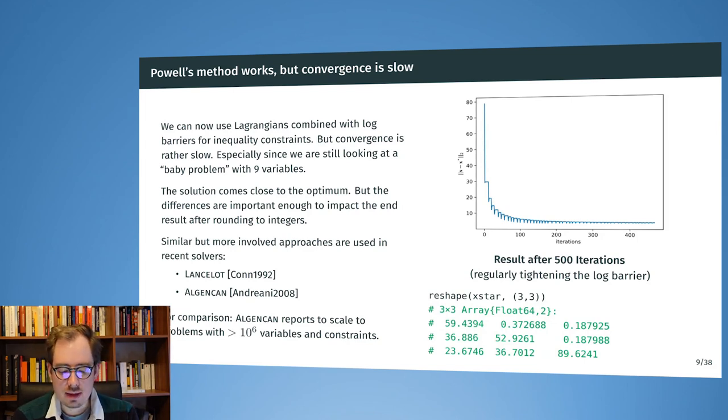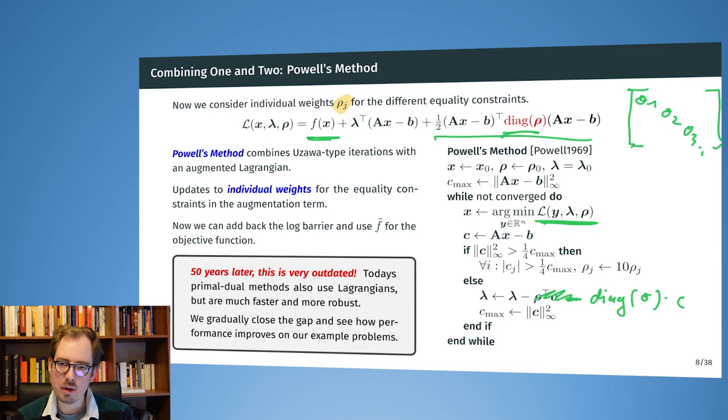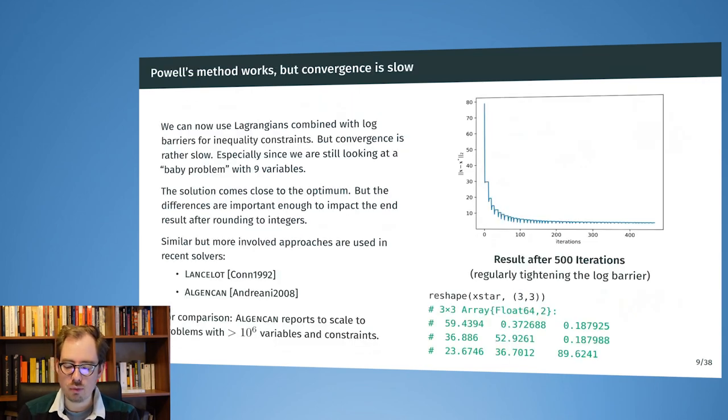So the method, as it is shown on the previous slide, Powell's method, we can combine it now with the inequality constraint handling of the interior point method. So we can now use Powell's method, but instead of f, we can have f tilde, depending on t, so how tight we want the barrier to be. And then we can iteratively solve the optimization problem with the Lagrangian, increase the tightening of the barrier, and repeat.